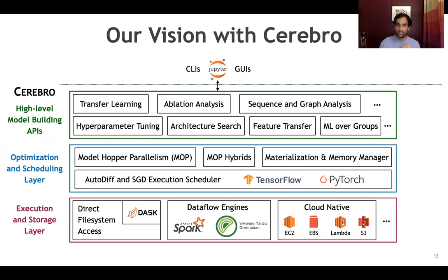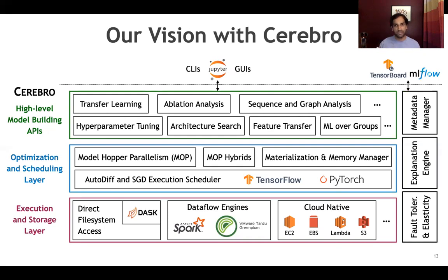One of these optimizations we recently published about is model hopper parallelism — a novel hybrid of data and task parallelism tailored to deep learning model building workloads. We are studying a whole bevy of new multi-query optimization techniques for a lot of these model building tasks, and also introducing new materialization and memory management capabilities for deep learning systems. The computational graph and the compilation we are not rebuilding — we can just take TensorFlow and PyTorch, wrap around them, and use them as our query execution units. We schedule these query execution units on the runtime layer. On the side, we also manage metadata and integrate with metadata management tools like MLflow and TensorFlow Extended. We also have an explanation engine to help data scientists understand what they are building, and also support fault tolerance and elasticity natively.